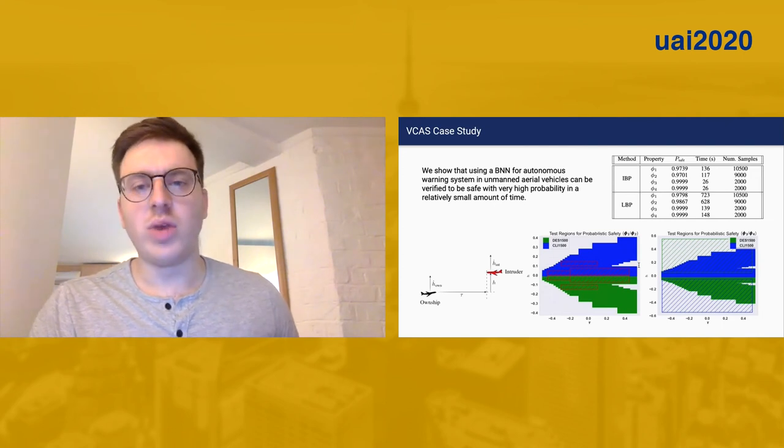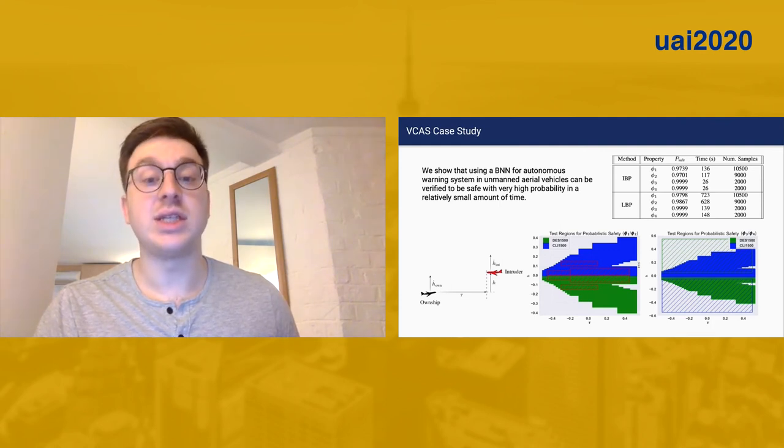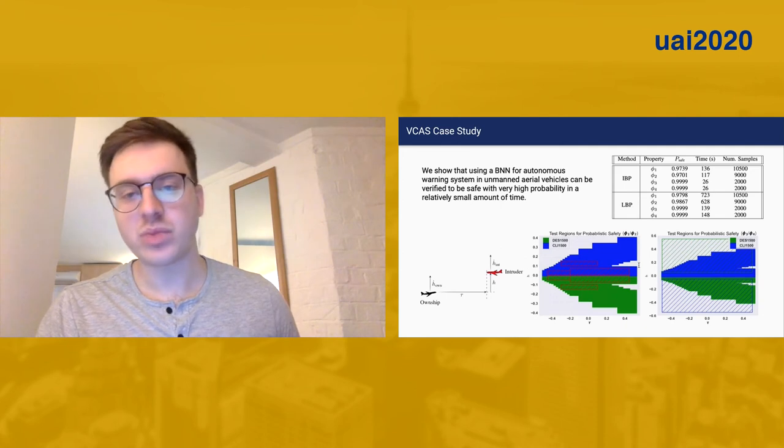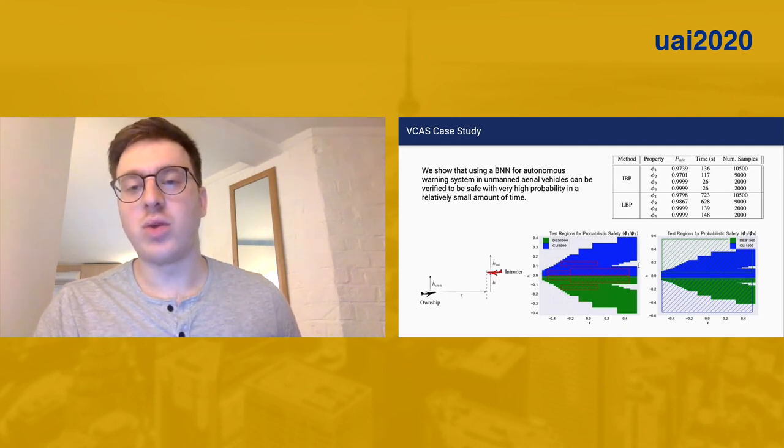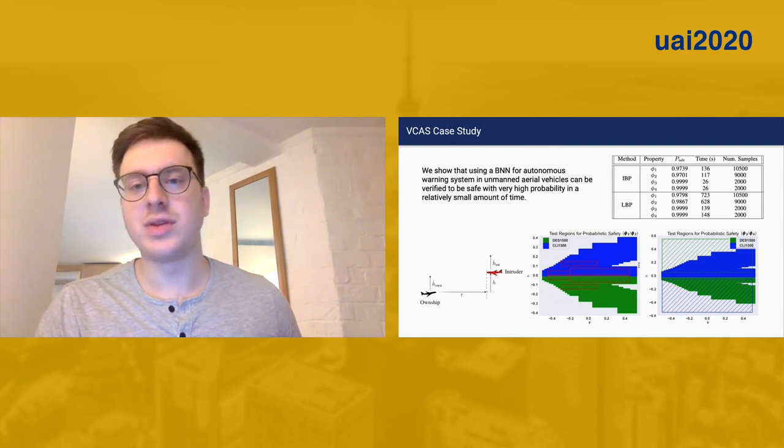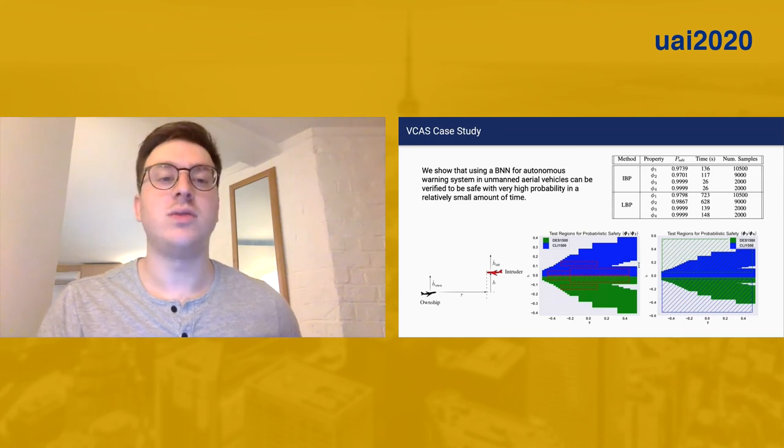We have several properties that we'd like to verify, for example, that the plane doesn't ascend when there's a vehicle above it, and then it doesn't descend when there's a vehicle below it. We're able to verify with high probability that the BNN is safe in a relatively short amount of time. And remember, this is a lower bound probability, so the BNN is probably quite safe in this case.